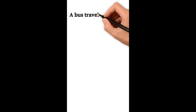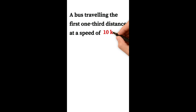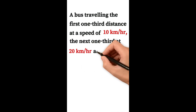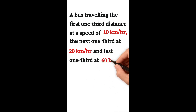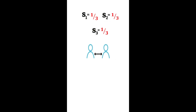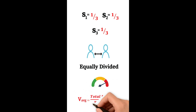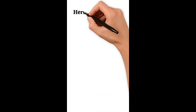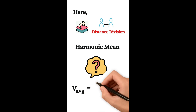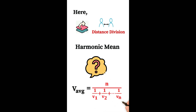A bus travels the first one-third distance at 10 km/h, the next one-third at 20 km/h, and the last one-third at 60 km/h. What is the average speed? Since the distance is equally divided into thirds, we can use the harmonic mean shortcut: v_average = n divided by (1/v1 + 1/v2 + ... + 1/vn).